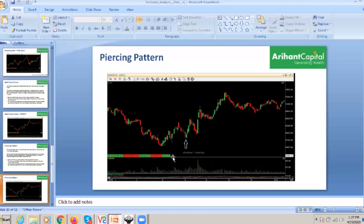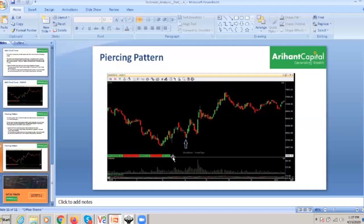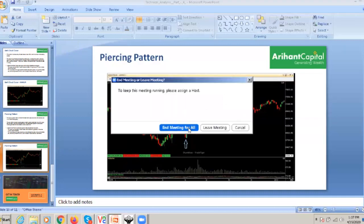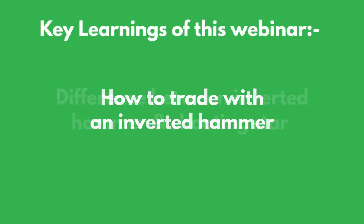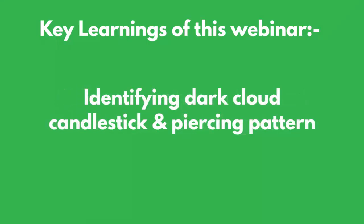You can find these patterns in daily, 30-minute, or 60-minute charts. Please practice this on at least two or three stocks and identify them for the next session. Please tell me about the patterns — dark cloud cover, piercing pattern, inverted hammer, and shooting star — which we have discussed today. You can easily identify them, so please practice and identify them. Thank you very much.